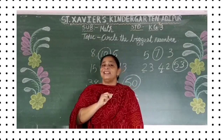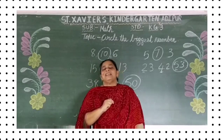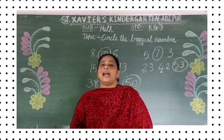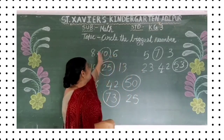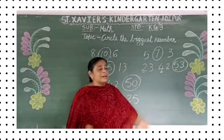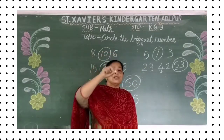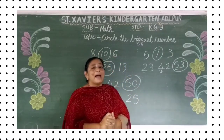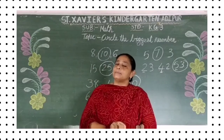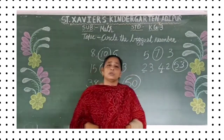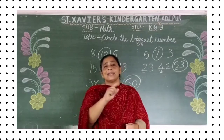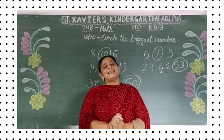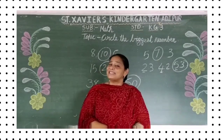Ok my dear students. He na interesting? Majhe aay na sabko? Yes. So, your homework — take out your Maths notebook and write. Circle the biggest number, write the numbers and circle it. Dono ke usme circle karna. Abhi aapko likhne nahi aate honge to ask your parents' help. Aapki parents ki madad se numbers likhwa do, aur usmeh kaunsa bada hai — us number pe aapko circle marna hai.